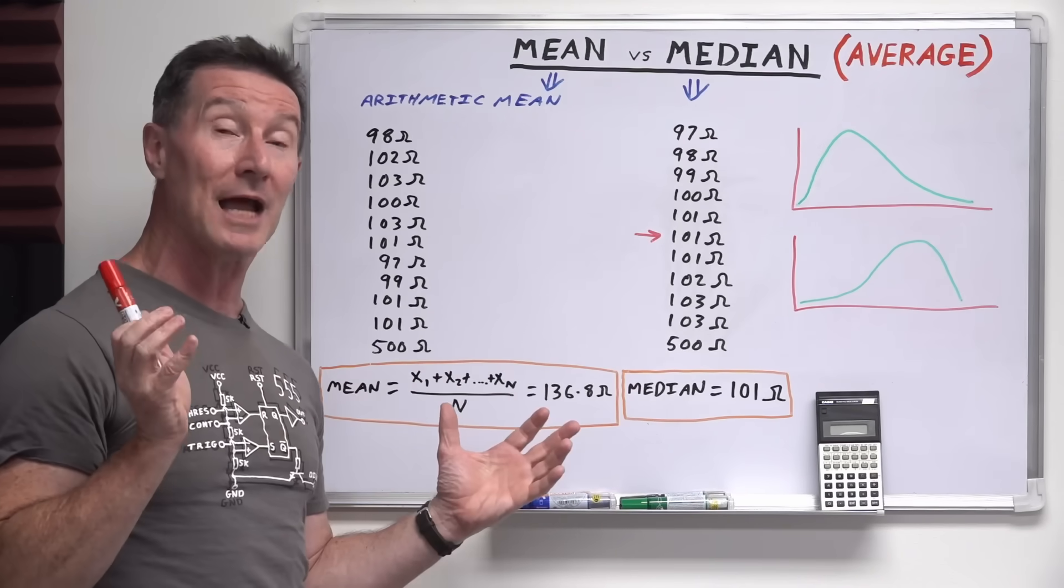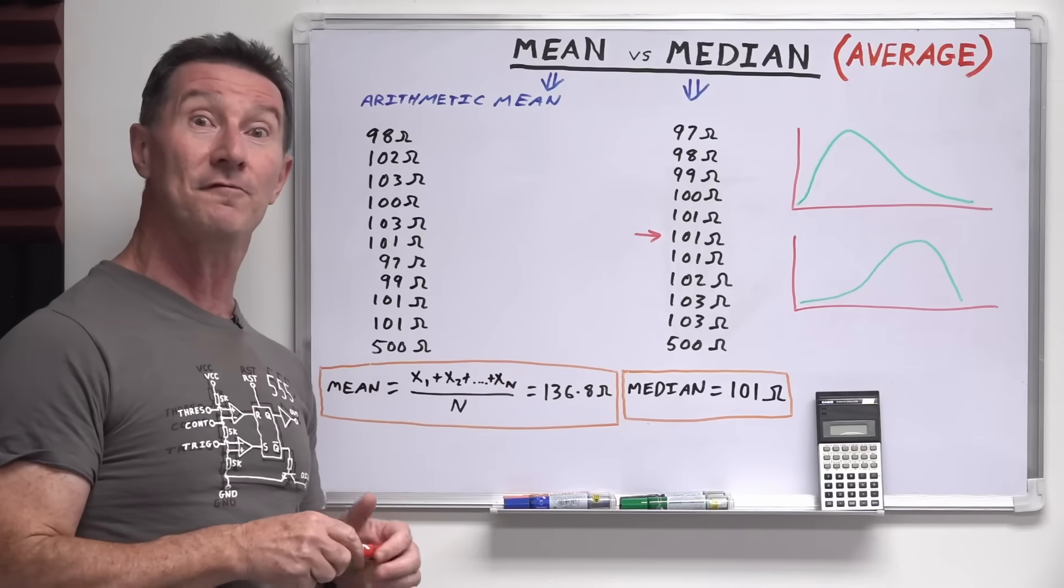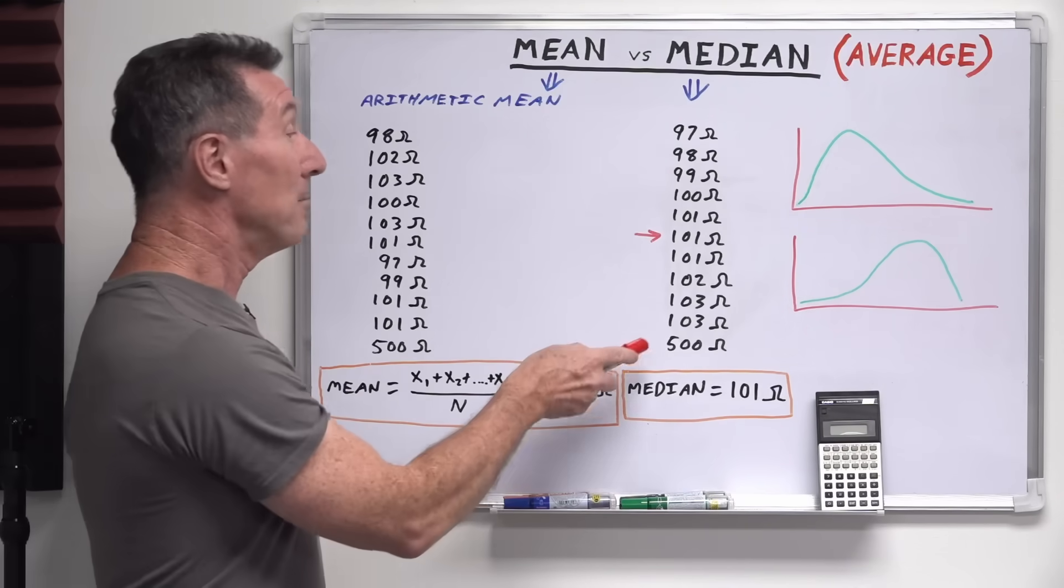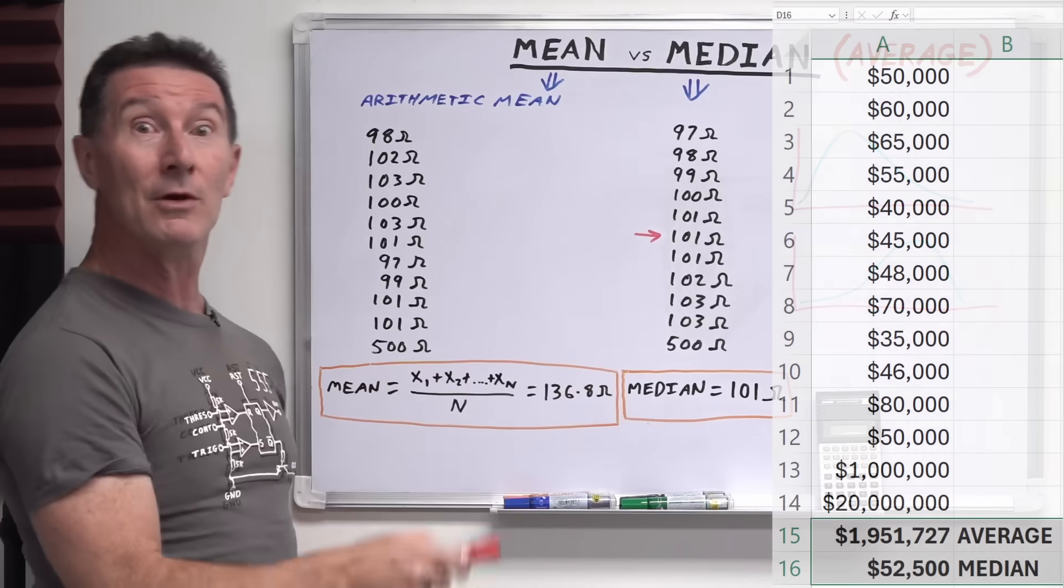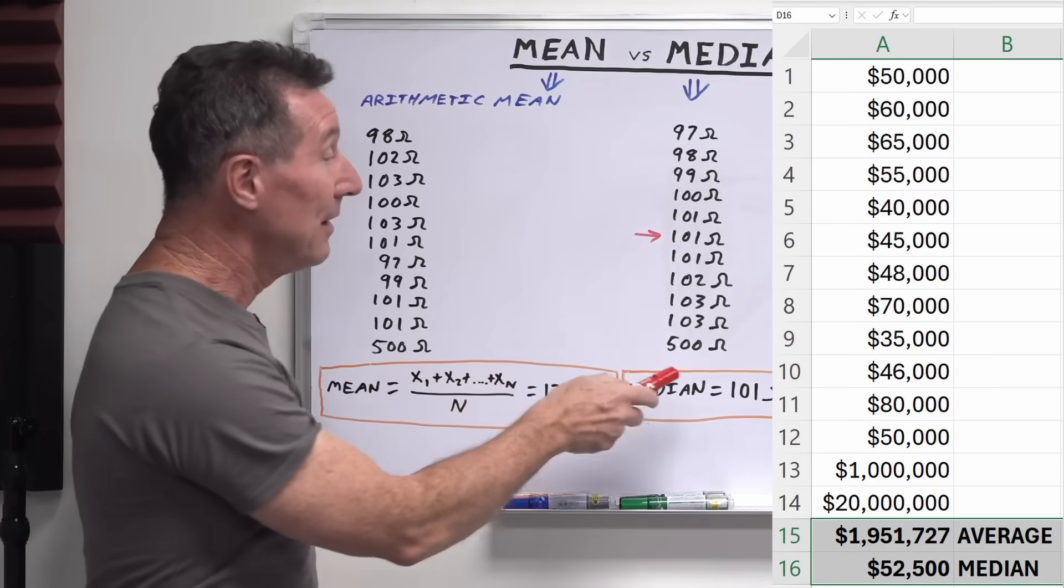And they said, oh, the average wage at this company is $100,000 a year. But you know that everyone's only earning $50,000 a year. But because the CEO is earning $50 million a year, if you use the mean, that's going to push up the average value. But if you use the median.